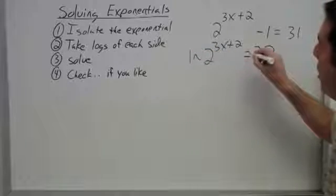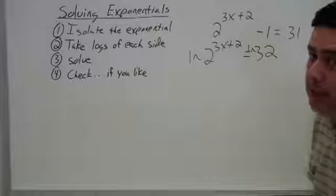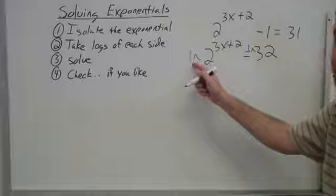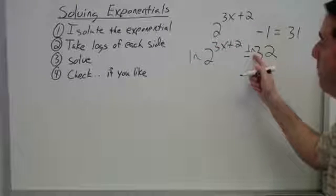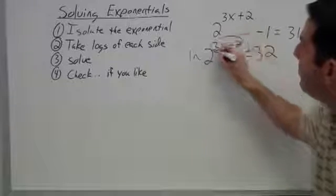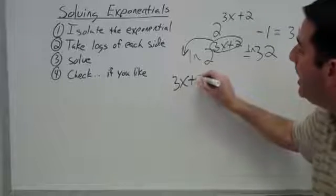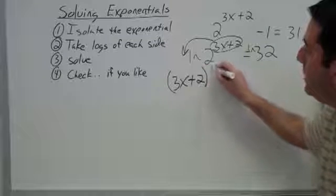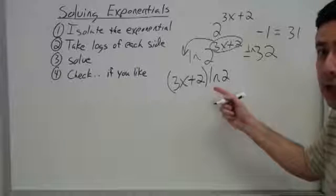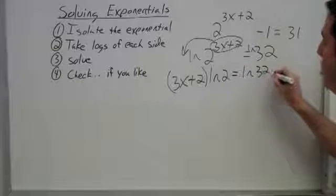You can do whatever kind of log you like. I prefer to do an LN because it saves me one letter to write. Now, whatever I've done to one side, I have to do to both sides. Once we've taken the log, now the exponent can move down in front as a multiplier. It technically should be in parentheses since all of this is to be multiplied times LN of 2. This is equal to LN of 32.